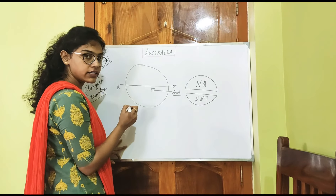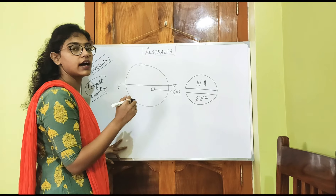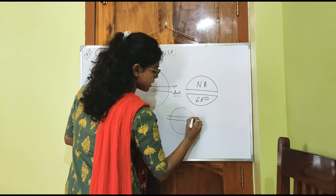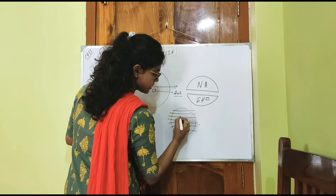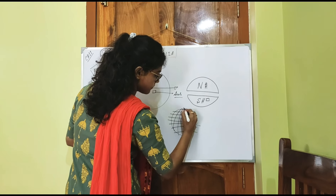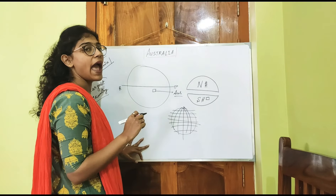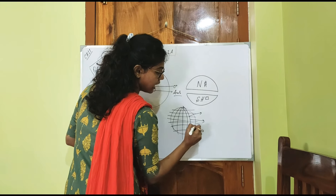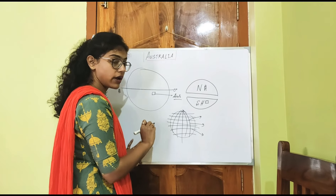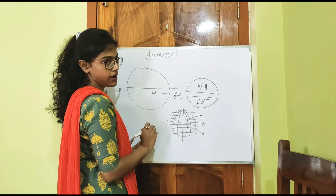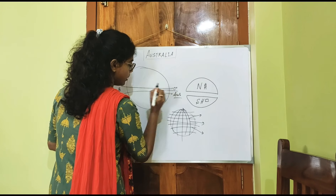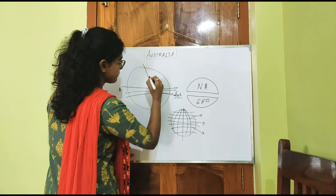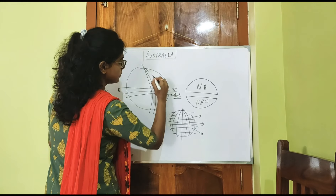We need to know the longitudinal location and the latitudinal location. Here are some latitudes, and these are our longitudes. Whenever we need to know the actual location of a place, we have to find out the longitude and the latitude of that location — that is the longitudinal location and the latitudinal location.